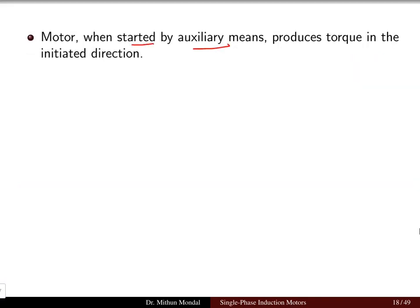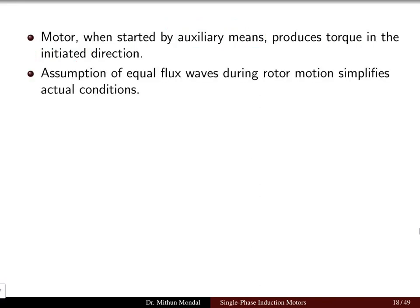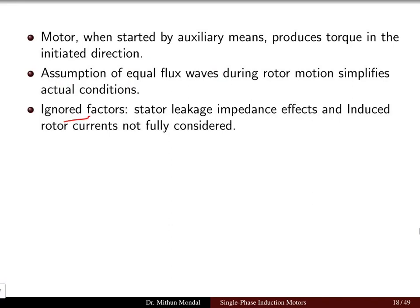The motor operates when started by auxiliary means — by hand or by using auxiliary motors, which we discussed in the previous lecture. These auxiliary means produce a torque in the initiated direction, either forward or backward depending on which direction the user rotates the motor. The assumption of equal flux waves during rotor motion simplifies the actual condition; factors like stator leakage impedance and induced rotor current are generally ignored.